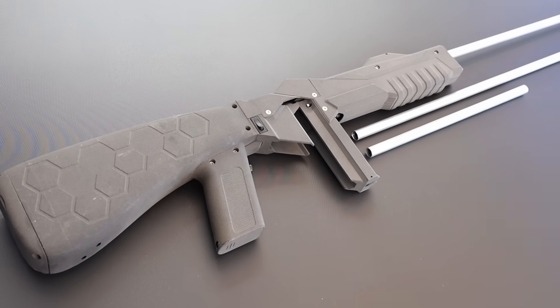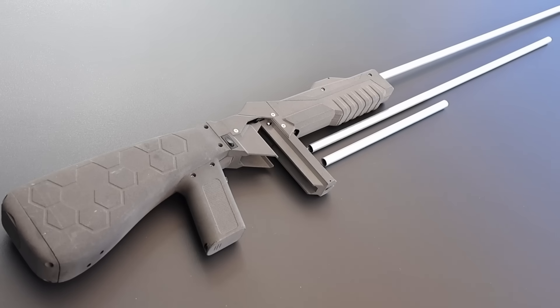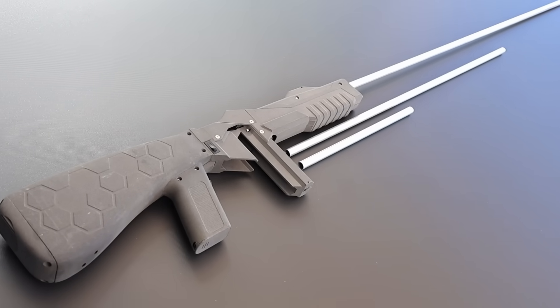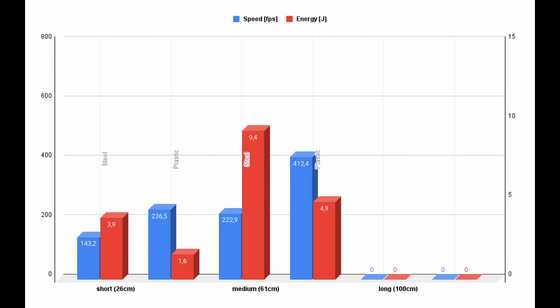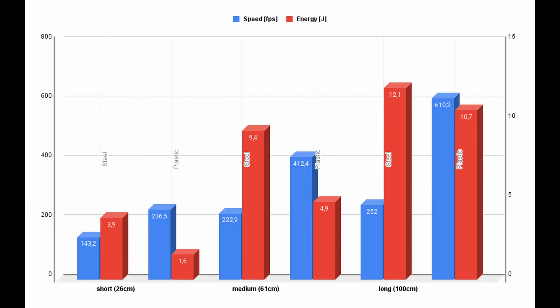With a 1 meter barrel, the gun looks even stranger, but I got even higher values: 252 fps with steel balls and 610 fps with plastic ones. The highest energy I measured was 12.1 joules. What's interesting is that the energy gap between steel and plastic gets smaller when the barrel length increases. If anyone has a theory on why that happens, I'd be curious to see a discussion in the comments.